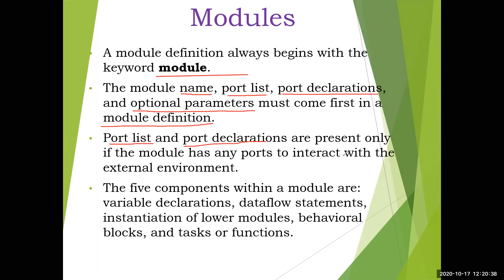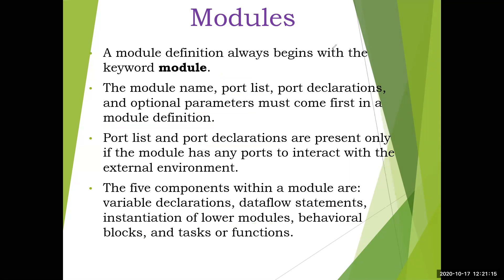Port list and port declarations are present only if the module has any ports to interact with the external environment. Normally in the stimulus block you don't have this; in all design blocks this is required. The five components within a module are: variable declarations of registers and wires, data flow statements with 'assign', instantiation of lower level modules for gate level description, behavioral blocks like 'initial' and 'always', and then tasks or functions. So these are the five blocks within a module - this is an important question they will also be asking. We will explain these five parts briefly.